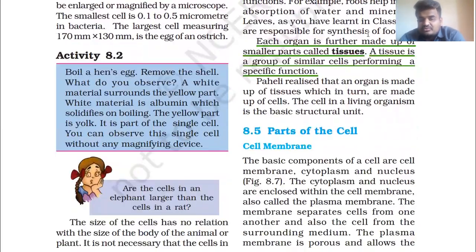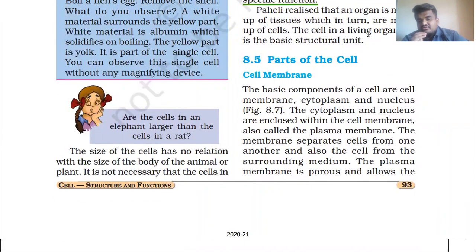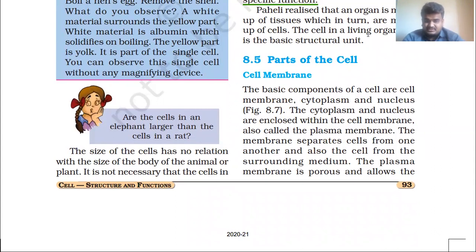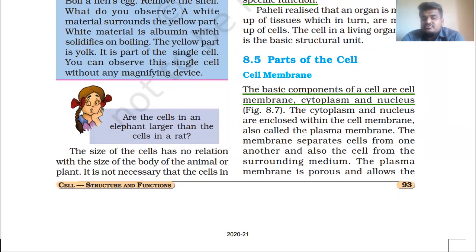Now it's time to study the parts of the cell. We have studied what a cell is and how it can be classified. Now let's study about the cell membrane, also called the plasma membrane. The main basic parts of the cell are: cell membrane or plasma membrane, cytoplasm, and nucleus — as shown in figure 8.7. These are the three basic components of the cell.